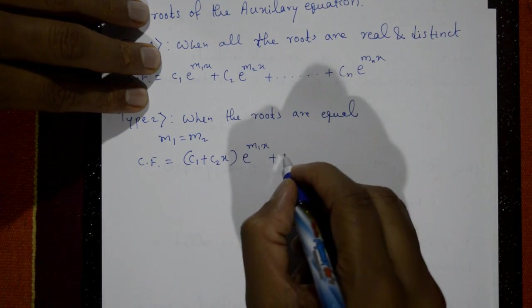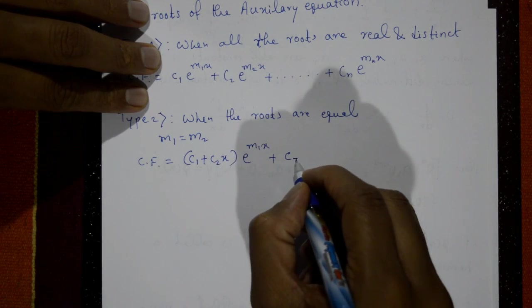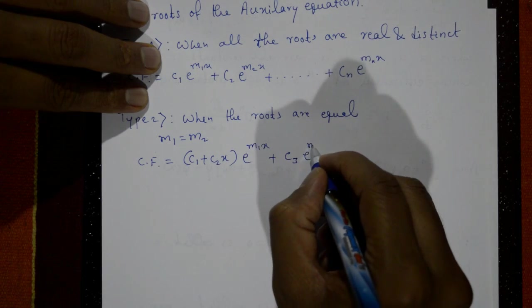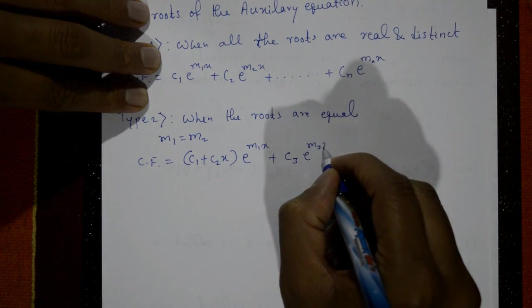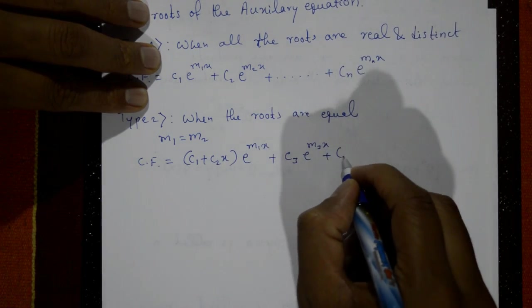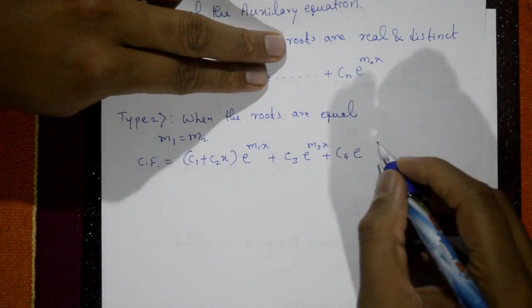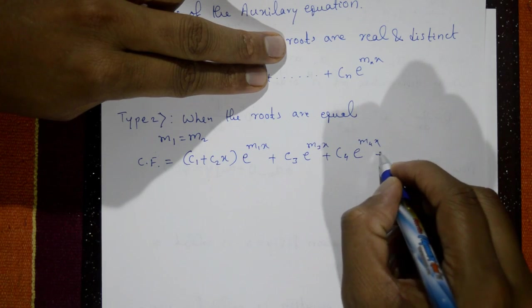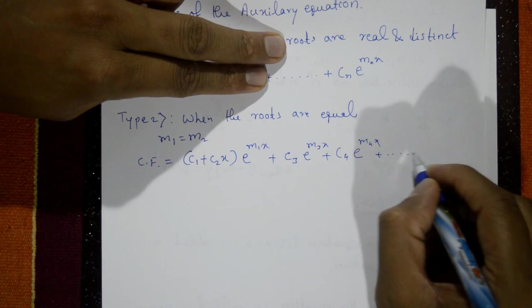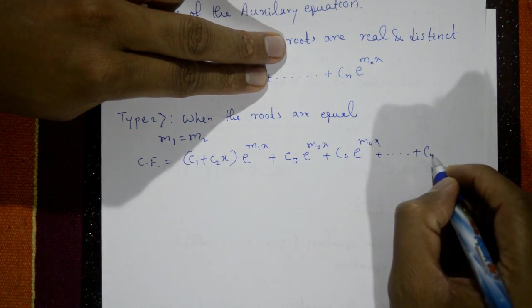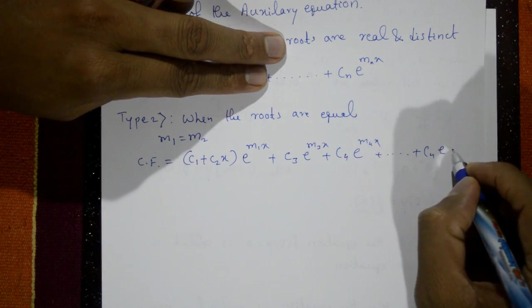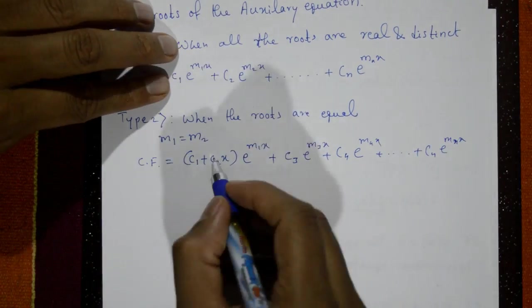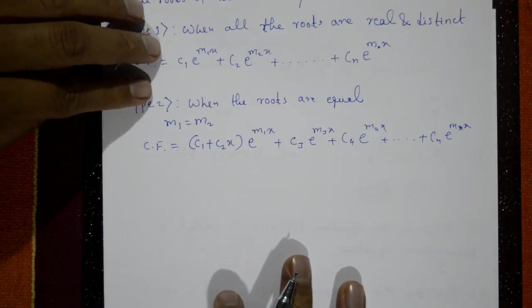The remaining terms continue as c3·e^(m3·x) + c4·e^(m4·x) + ... + cn·e^(mn·x). This is the complementary function when two roots are equal.